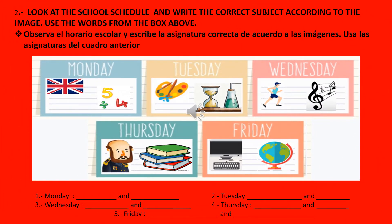Number 2: Look at the school schedule and write the correct subject according to the image. Use the words from the box above. Observa el horario escolar y escribe las asignaturas correctas de acuerdo a las imágenes. Usa las asignaturas del cuadro anterior. Monday: English, Math. Tuesday: Art, Science. Wednesday: Physical Education, Music. Thursday: History, Language. Friday: Technology or Computer and Geography. Y ahí abajo están las oraciones que debes completar. Fácil, ¿verdad?